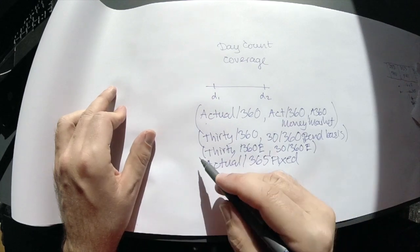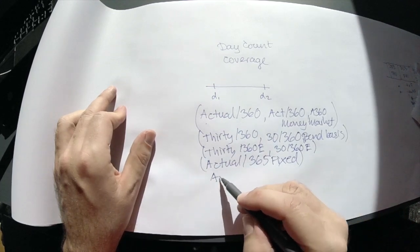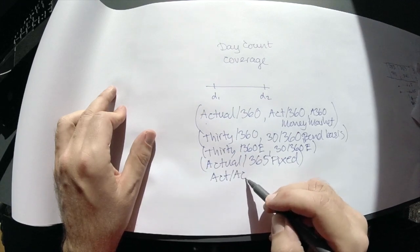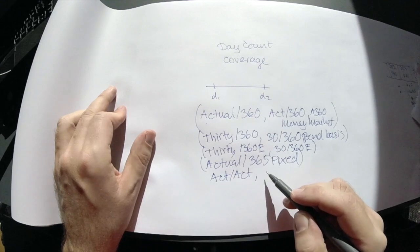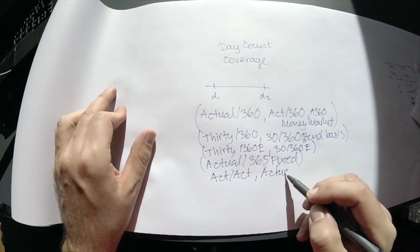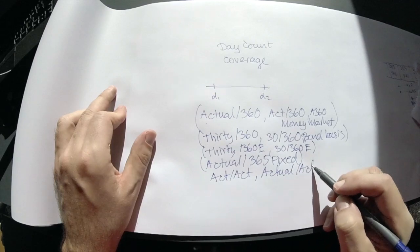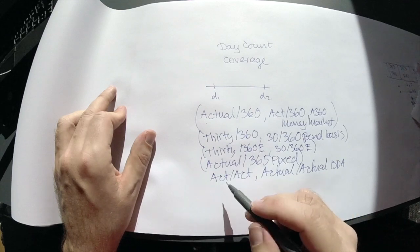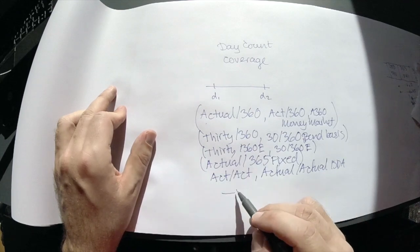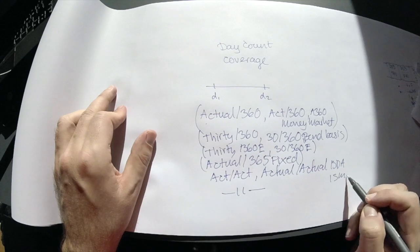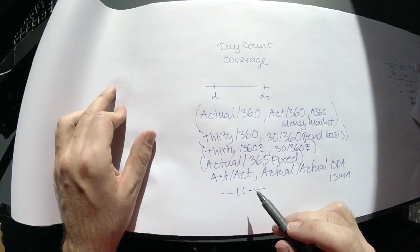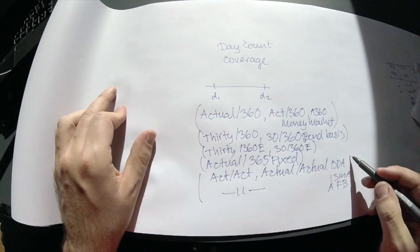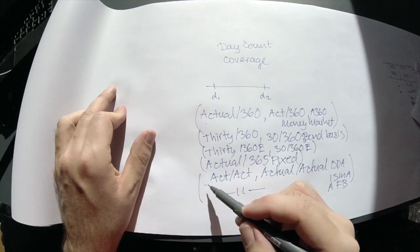And then there are a few remaining ones. There's an Act/Act convention, sometimes called Actual/Actual ISDA. There's also another Act/Act ISMA, and finally there's an Act/Act AFB. I won't go into the finer details, but they are different, these three.